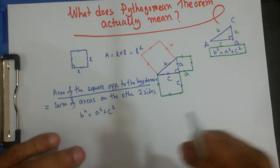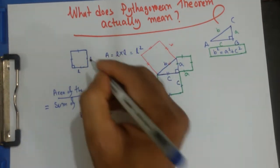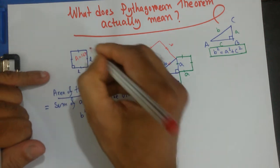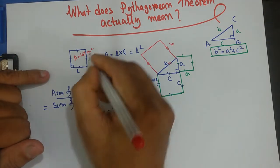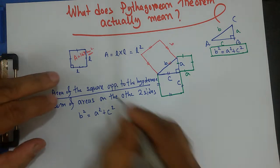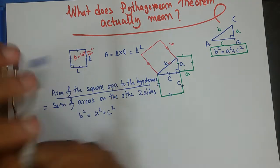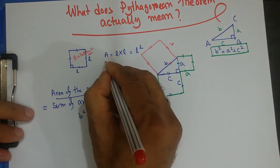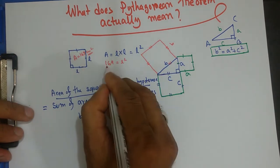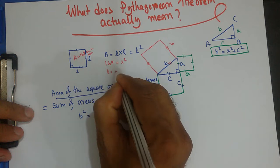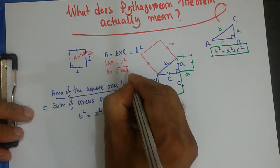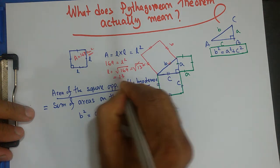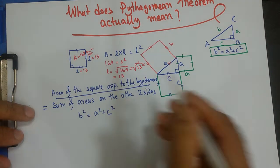Now let's see how this works. Let's say this area equals 169 square centimeters. What is the length? Area equals L squared, so 169 equals L squared. This is a perfect square, so L equals the square root of 169, which is the square root of 13 squared, which equals 13. So L equals 13.